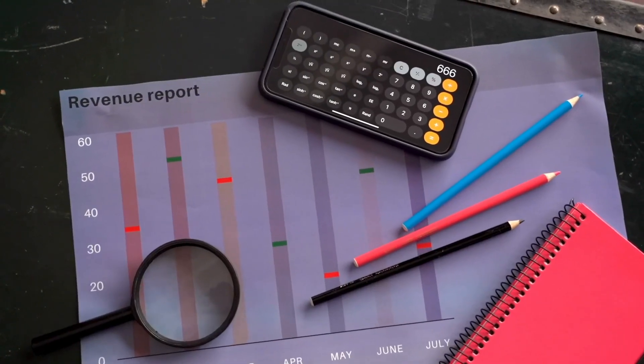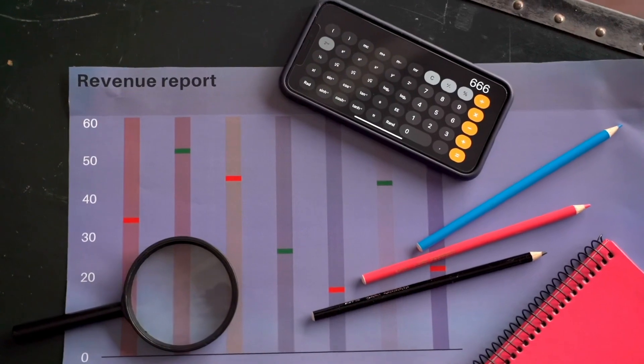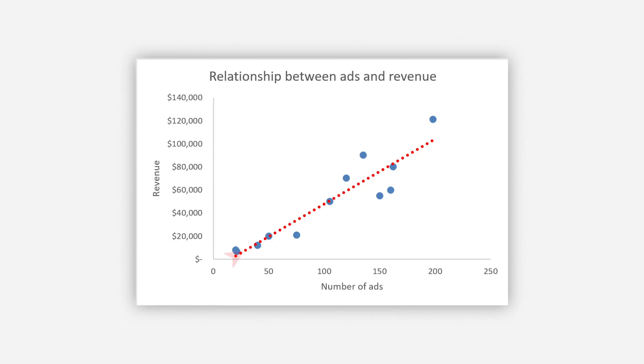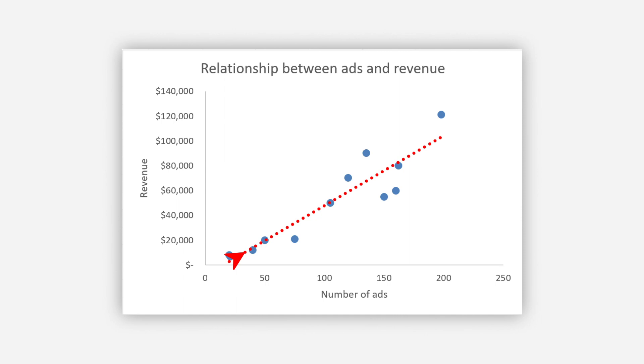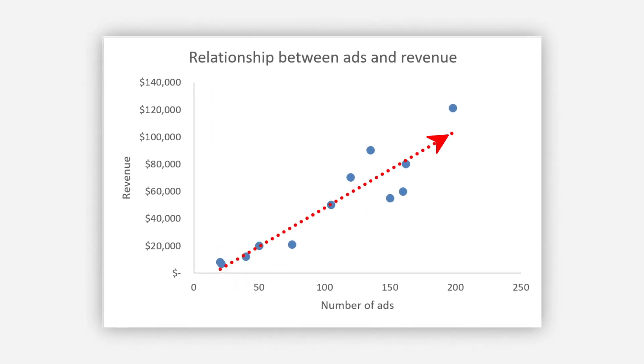Another example is you can forecast revenue based on advertisement of products done by the company. It helps to make judgments on how many ads should be run at one time.